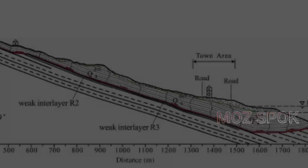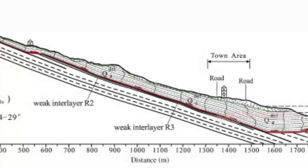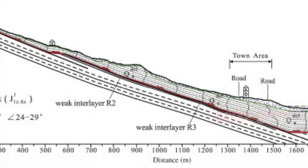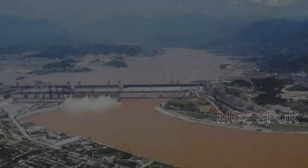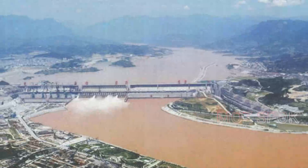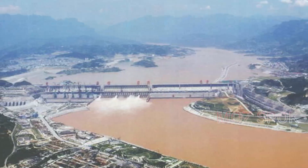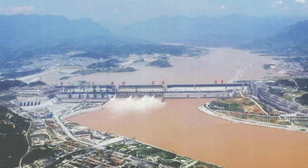Taking the Xuping accumulation landslide, with a sliding mass volume of 20.7 × 10⁶ cubic meters in Zigui County, and the Outang dip-slope landslide, with a sliding mass volume of about 90 × 10⁶ cubic meters in Fengjie County, as two typical cases, the mechanisms of reactivation of the two landslides are analyzed.